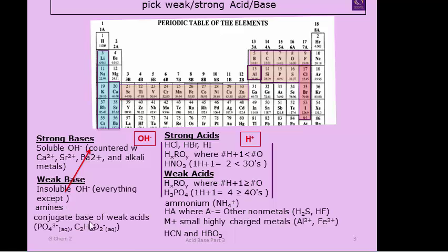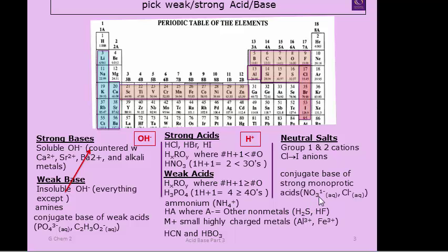Weak bases include: amines — nitrogen bound to three things; conjugate bases of weak acids (e.g., when hydrogen cyanide loses its proton, the cyanide ion is basic; borate ion is basic; ammonia is basic; phosphate ion is a weak base). Neutral salts: group one and two cations alone are neutral; chlorine-through-iodine anions are neutral; conjugate bases of strong monoprotic acids like nitrate, chloride, bromide, and iodide are neutral.